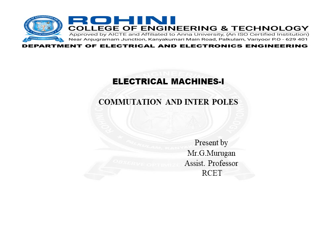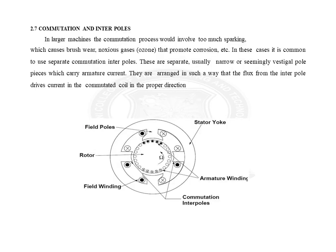Today we are going to see about commutation and the interpoles of the machine. In larger machines, the commutation process would involve too much sparking, which causes brush wear and nauseous gases that promote corrosion. In this case, it is common to use separate commutation interpoles.